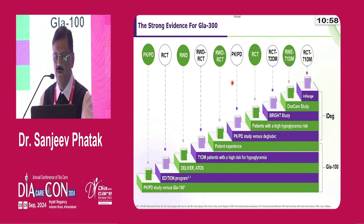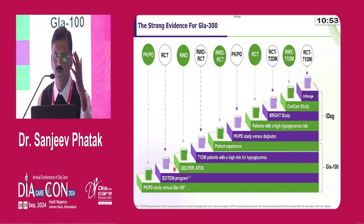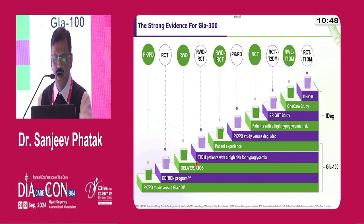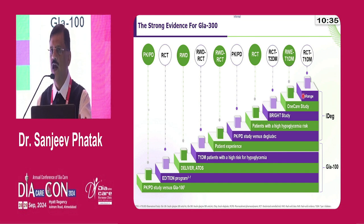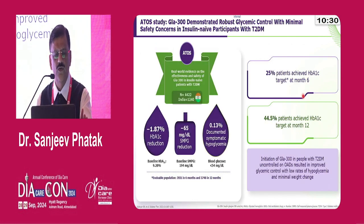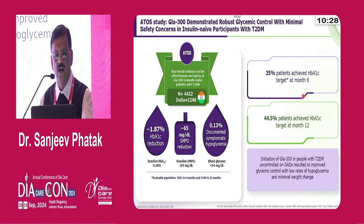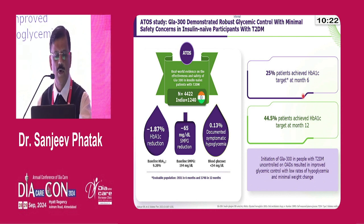The evidence in favor of glargine U300 comes from several studies: starting from PK/PD studies, then the EDITION program, the DELIVER and ATTO studies, type 1 diabetes patient studies, PK/PD versus degludec, and randomized as well as real-world studies comparing it with degludec including the BRIGHT study, and now time-in-range data from the IN RANGE study. Starting with ATTO — a real-world study of over 4,000 patients, about 1,200 from India.